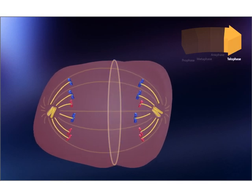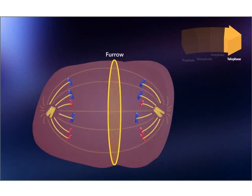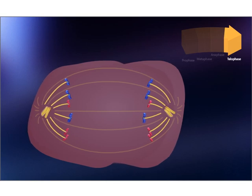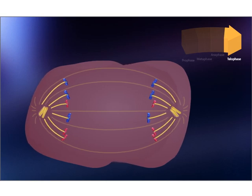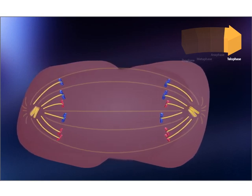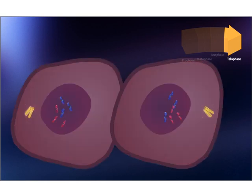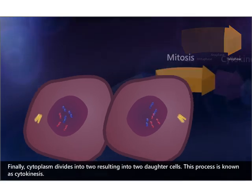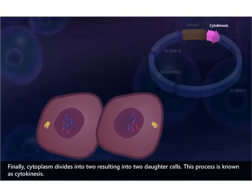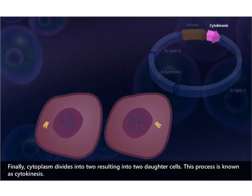At telophase, a furrow forms in the center of the cell. The nuclear membrane reappears around each set of chromosomes, chromosomes cluster at the opposite poles, the nucleolus reappears, and the spindle apparatus disassembles. Thus two daughter nuclei are formed. Finally, the cytoplasm divides into two, resulting in two daughter cells.